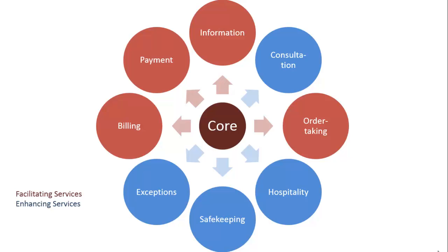The flower of service is made up of two components: the core product and supplementary services. The core product is based on the core set of benefits and solutions delivered to customers. It is the main component that supplies the desired experience. Examples of core product include a classy haircut or a delicious meal.